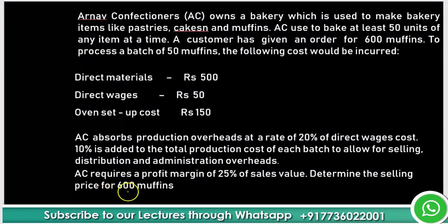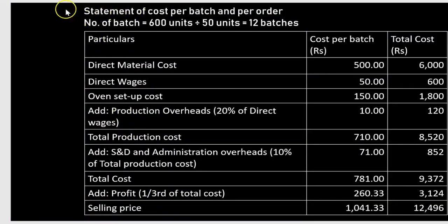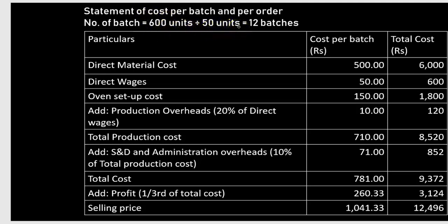We need to determine the selling price for 600 muffins. In one batch, they process 50 muffins and the order size is 600 muffins. So how many batches are required? 600 divided by 50 equals 12 batches. Our task is finding the selling price for all 600 muffins. We'll prepare a statement of cost per batch and per order.